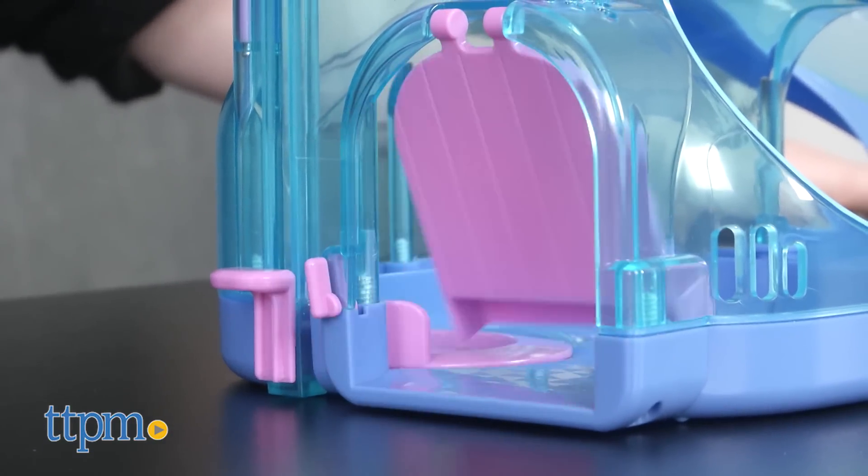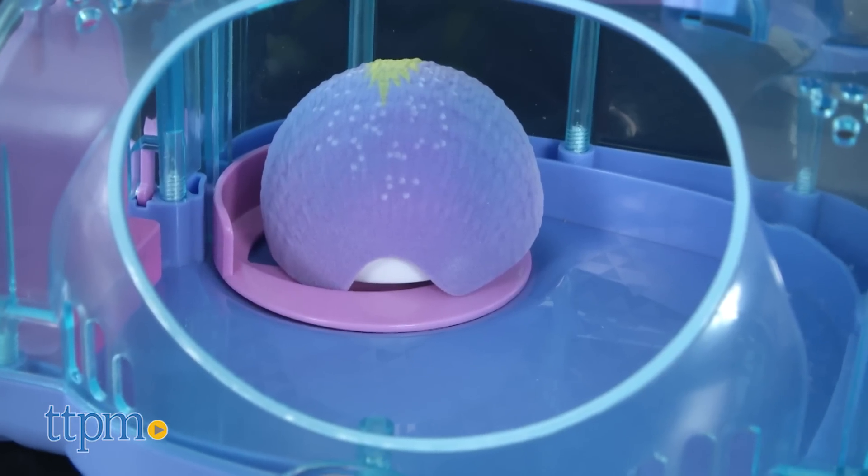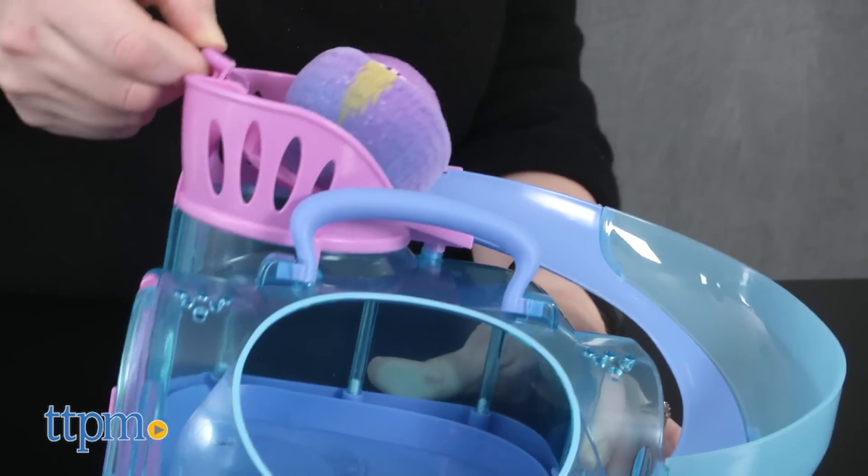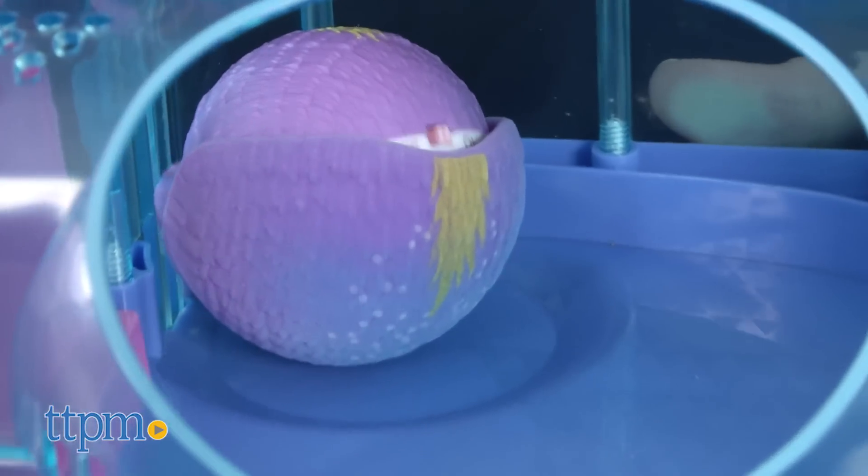The hedgehog may also run to the elevator. If it does and it rolls up into a ball, then you can quickly lift up on the elevator handle to bring the hedgehog up to the slide and watch the hedgehog slide back down into the house.